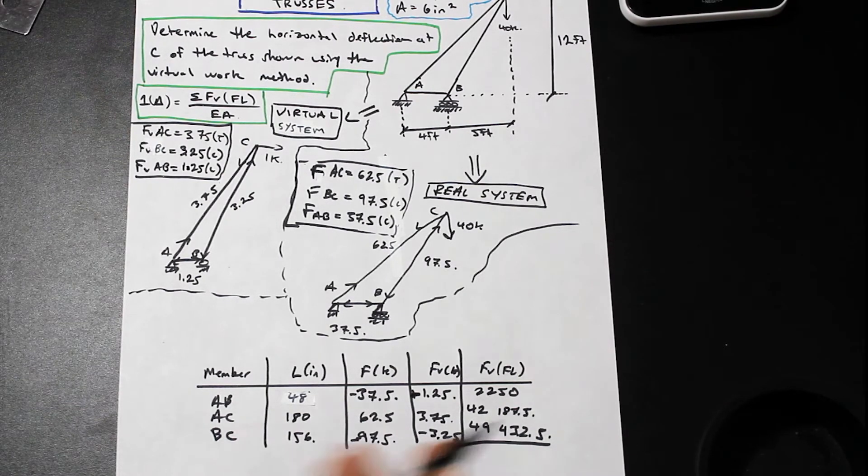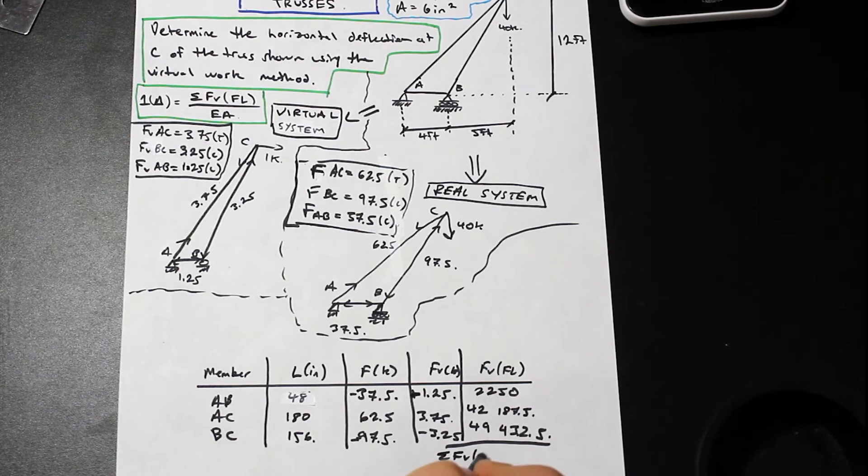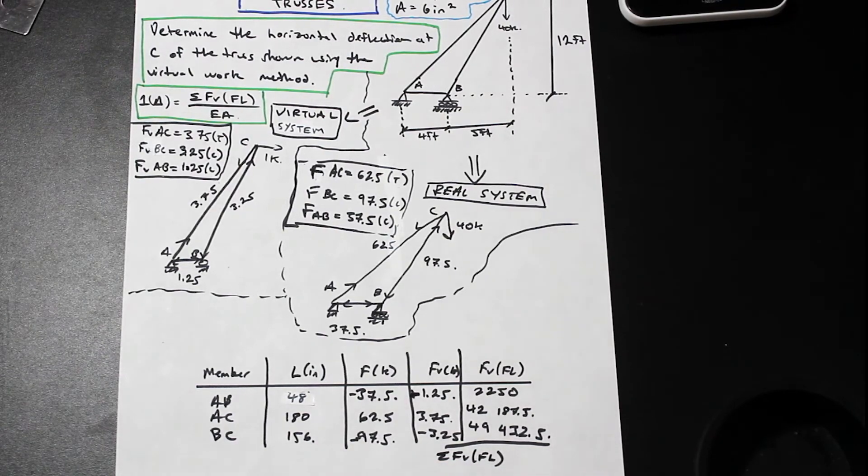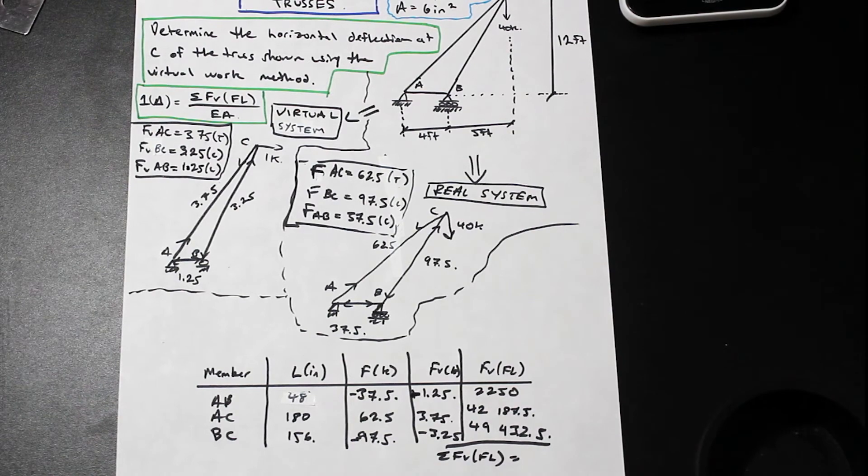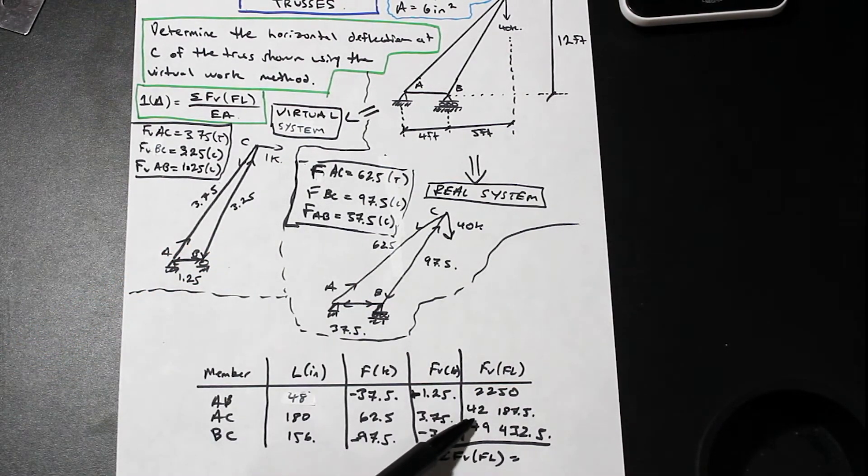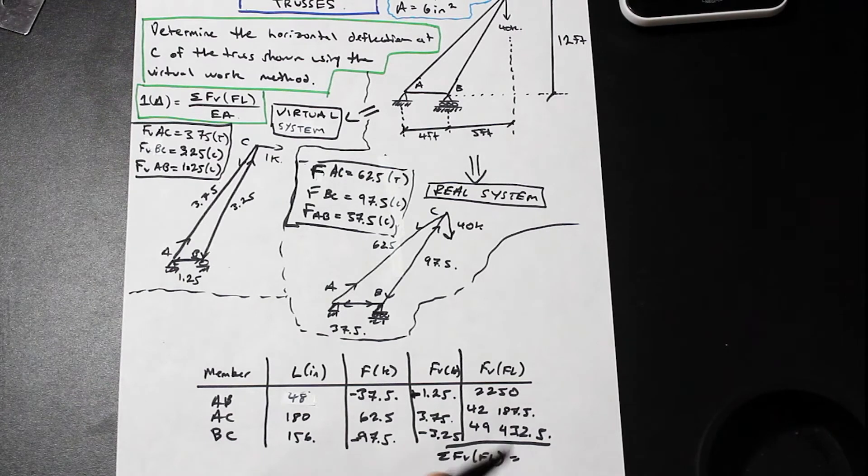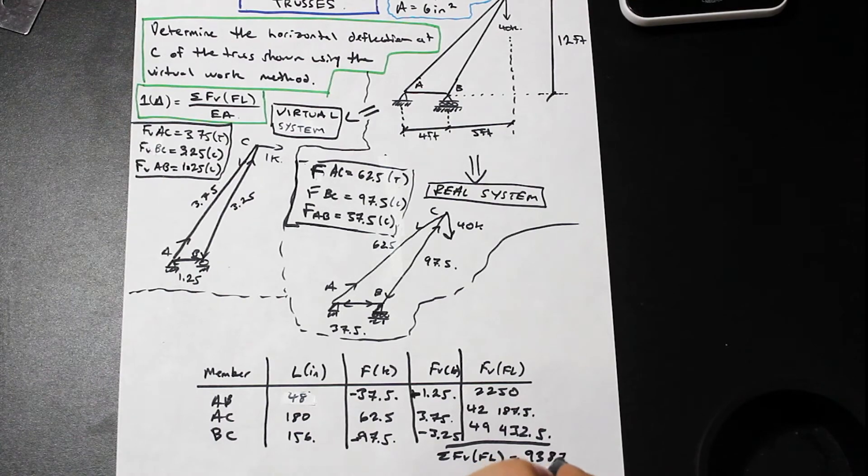And then same with the last row. Now, the last step, one of the last steps, is simply to find the sum of FVFL. The sum of FVFL is simply going to be these added together: 2250, 42,187, and this. And that is going to give us a value of 93,870.